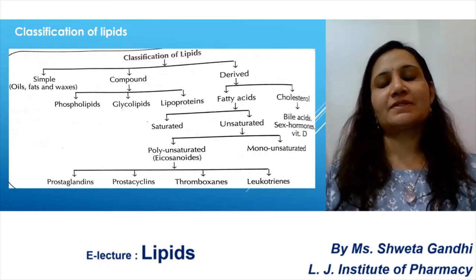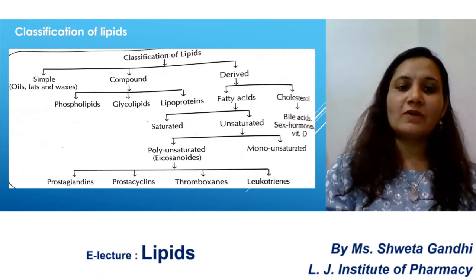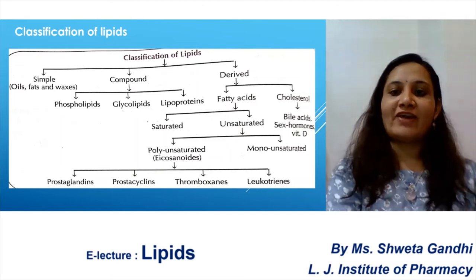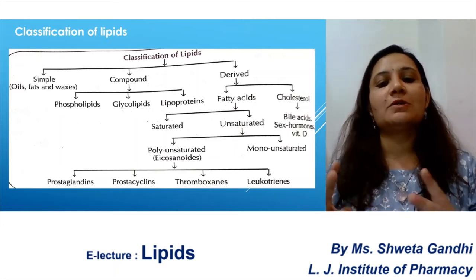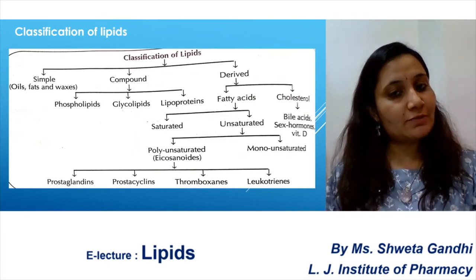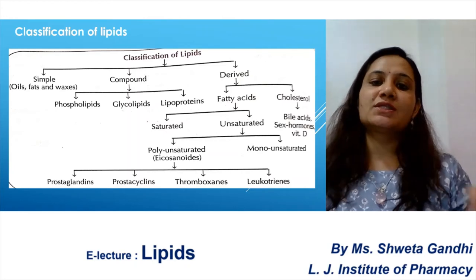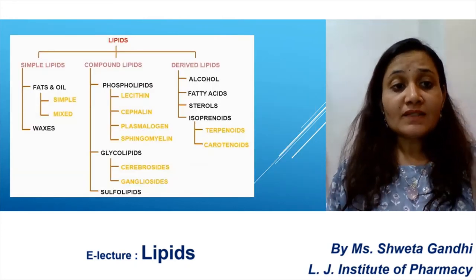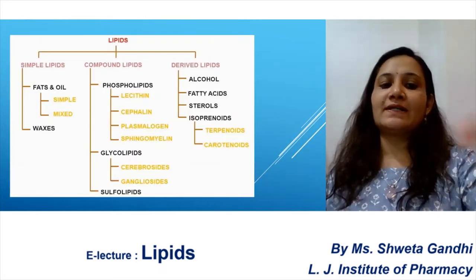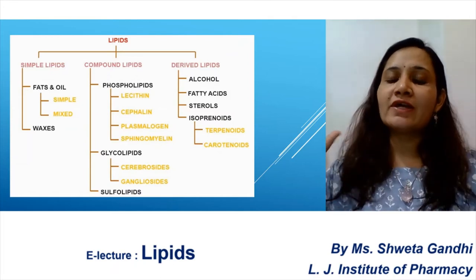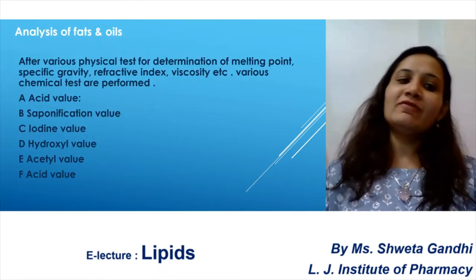Classification of lipids is mainly three types: simple, compound, and derived. Simple lipids include oil, fat, and waxes. Compound lipids include phospholipids, glycolipids, and glycoproteins. Derived lipids include fatty acids and cholesterol. Phospholipid content includes lecithin and plasmalogen, which have very important physiological importance in the human body. Sulfolipids are also part of this classification.